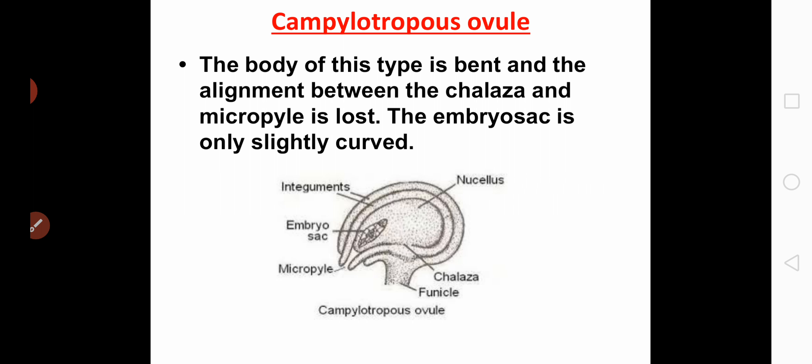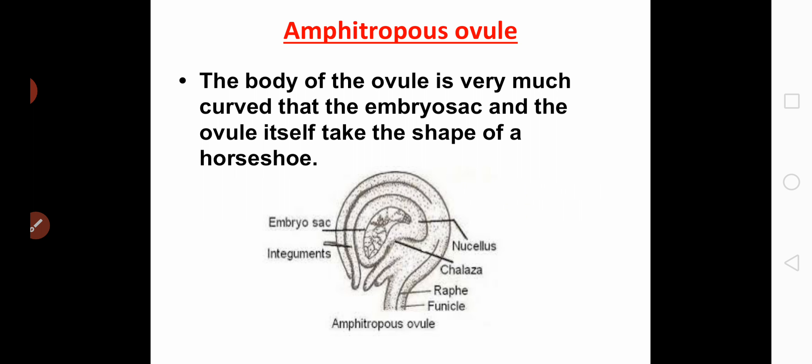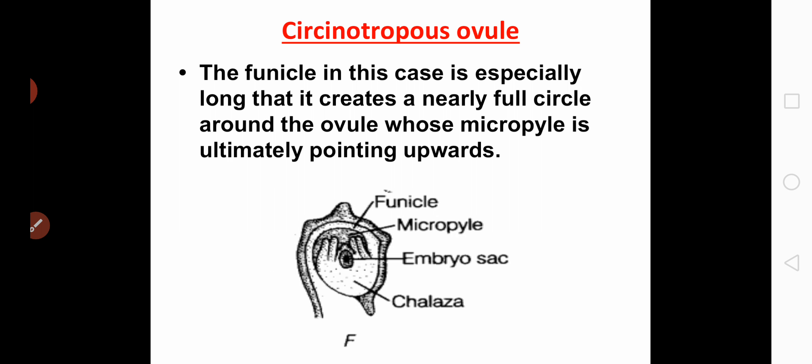In the campylotropous ovule, the body is bent and the alignment between the chalaza and micropyle is lost, with the embryo sac only slightly curved. In the amphitropous ovule, the body is very much curved so that the embryo sac and the ovule itself take the shape of a horseshoe. In the circinotropous ovule, the funicle is especially long and creates a nearly full circle around the ovule, with the micropyle ultimately pointing upwards. These are the types of ovules, and that concludes today's video.